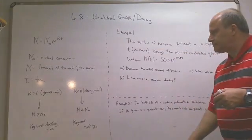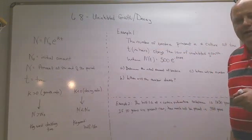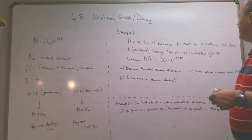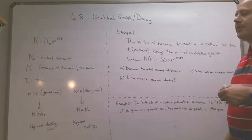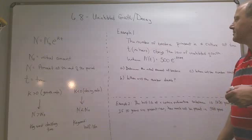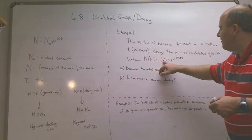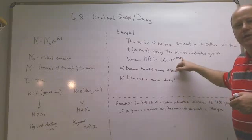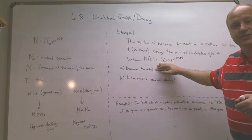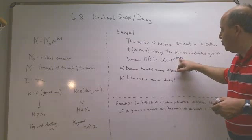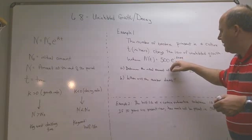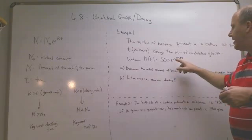I'll give you a couple of examples. Example one is a growth rate, and the second one is going to be a decay rate. Example one: the number of bacteria present in the culture at time t obeys the law of uninhibited growth, where N of t equals 500 times e to the 0.023t. A lot of these things you already know about the problem before you start. The 500 is what you start with, that's the initial amount. The 0.023 is the growth rate, so it would be 2.3%. That's how you know it's a growth rate, it's positive.